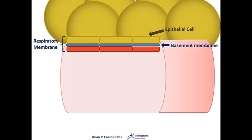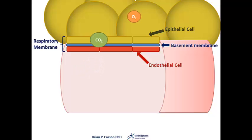On the capillary side, there is a thin layer made up of single endothelial cells. This minimal barrier allows carbon dioxide and oxygen to readily diffuse across the membrane down their partial pressure gradient.